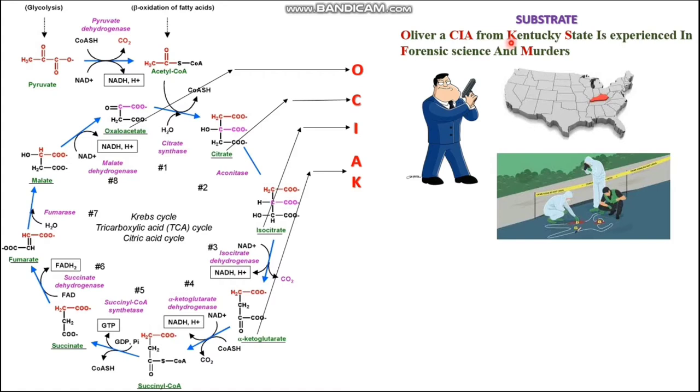The letter K of Kentucky stands for ketoglutarate. So for other substrate molecules we are using only one alphabet, but for alpha-ketoglutarate we are using two alphabets, that is A and K.